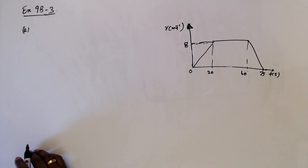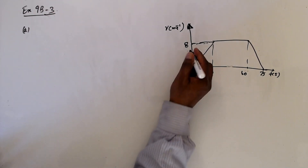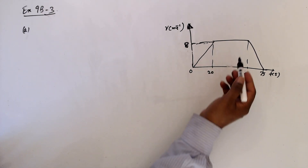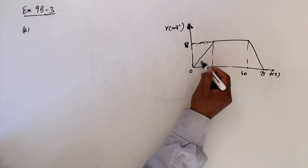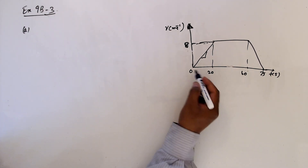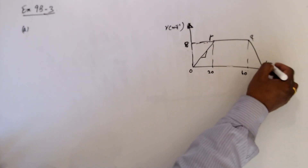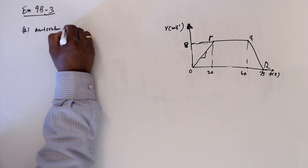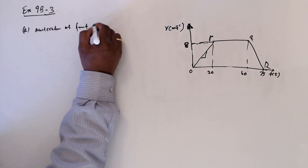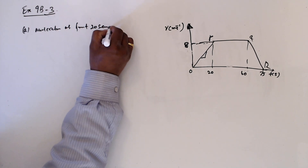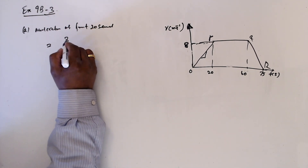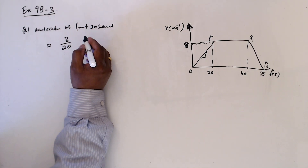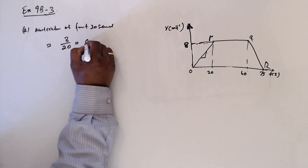Part 3, first question: acceleration of the cyclist for the first 20 seconds. You can find the acceleration by finding the gradient of OP on the graph. Acceleration for the first 20 seconds equals 8 divided by 20, which is 0.4 ms⁻².